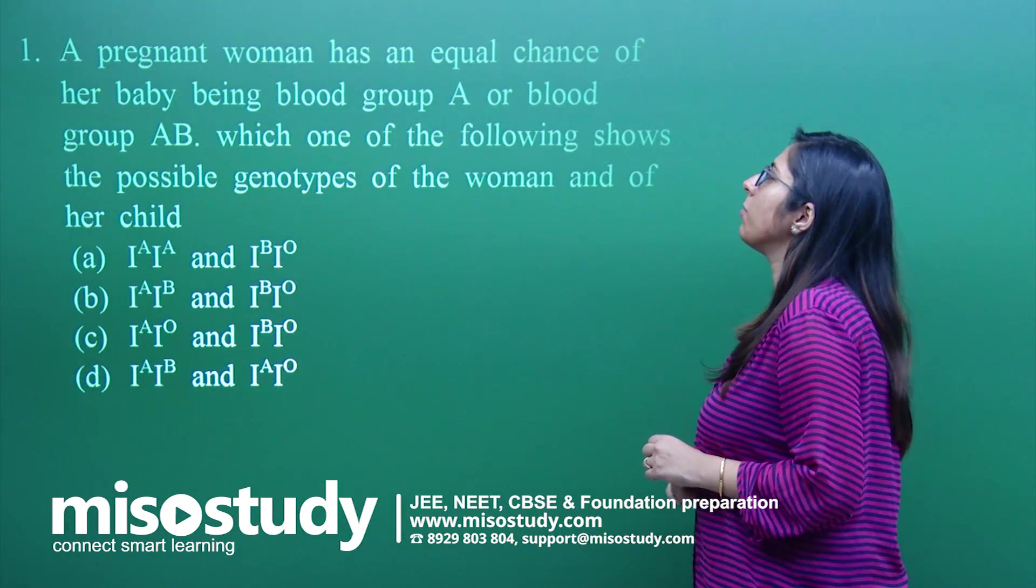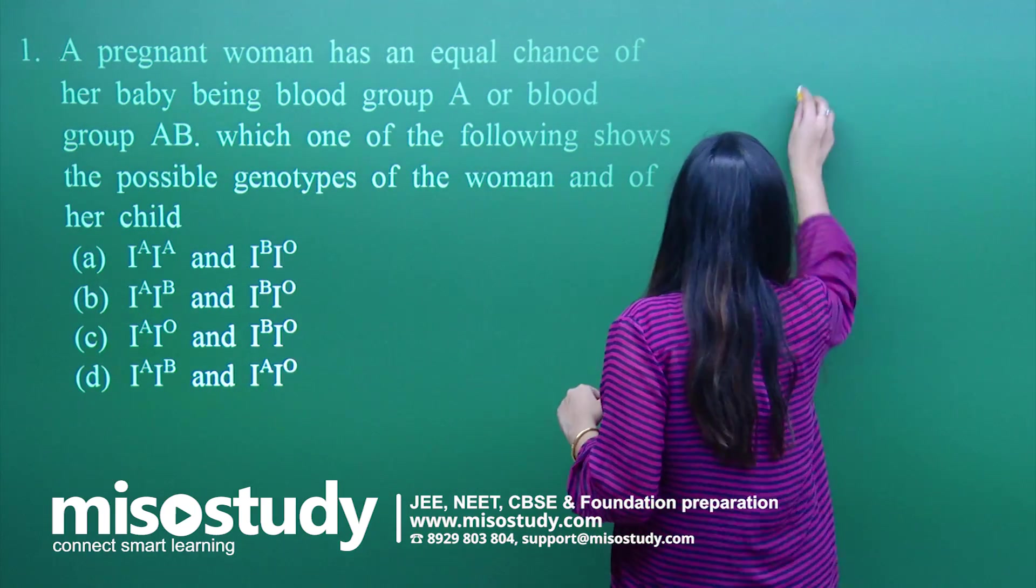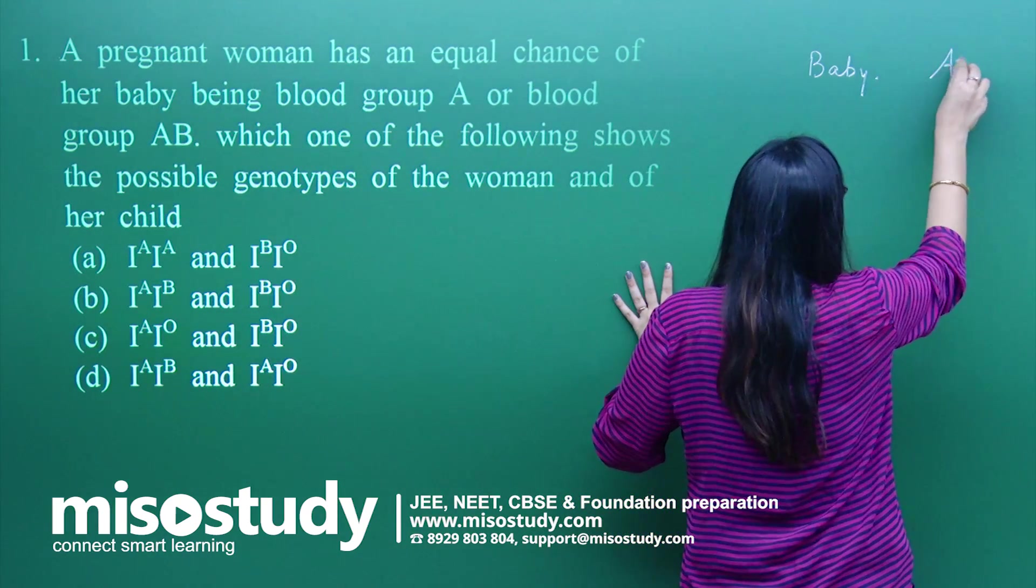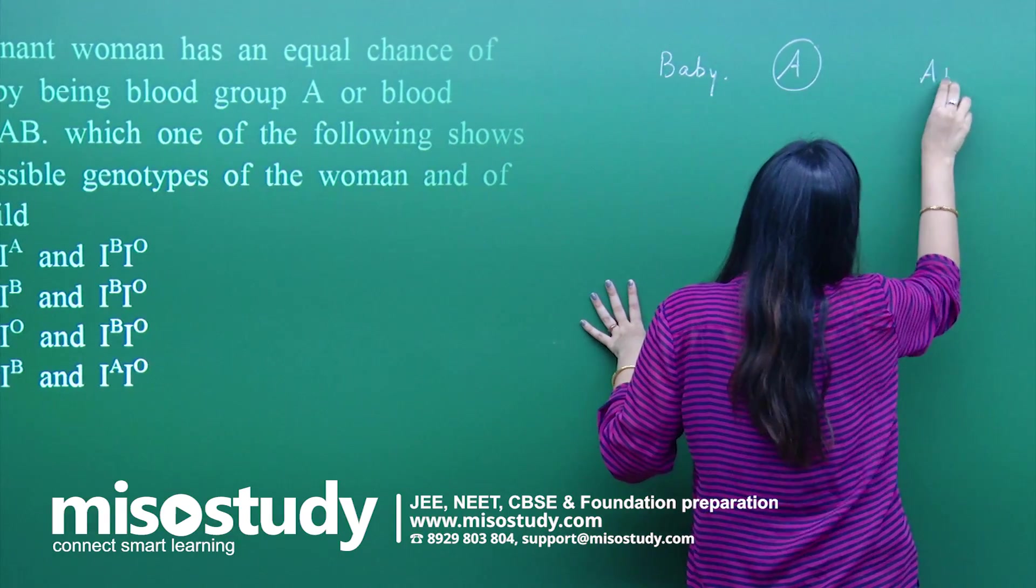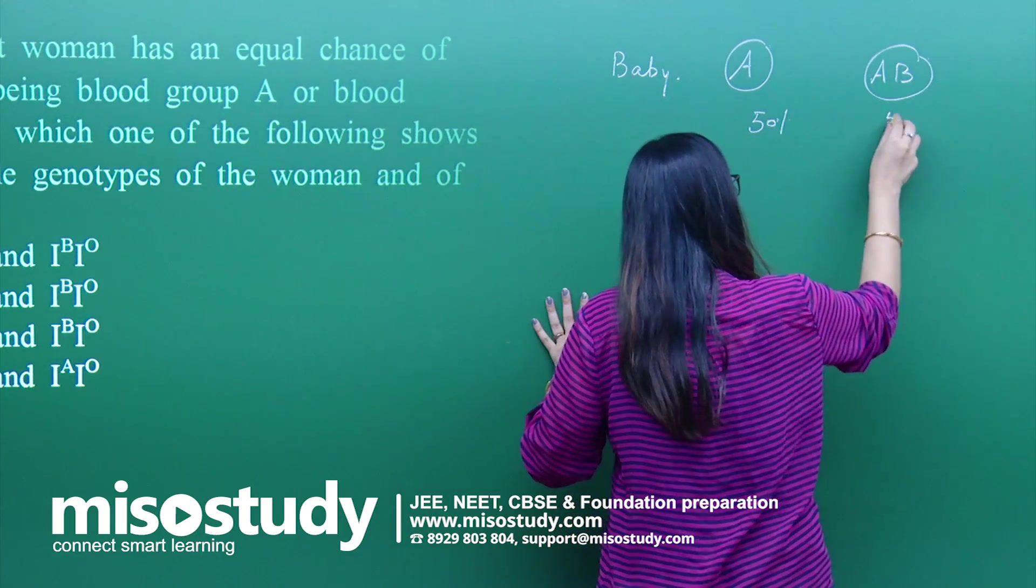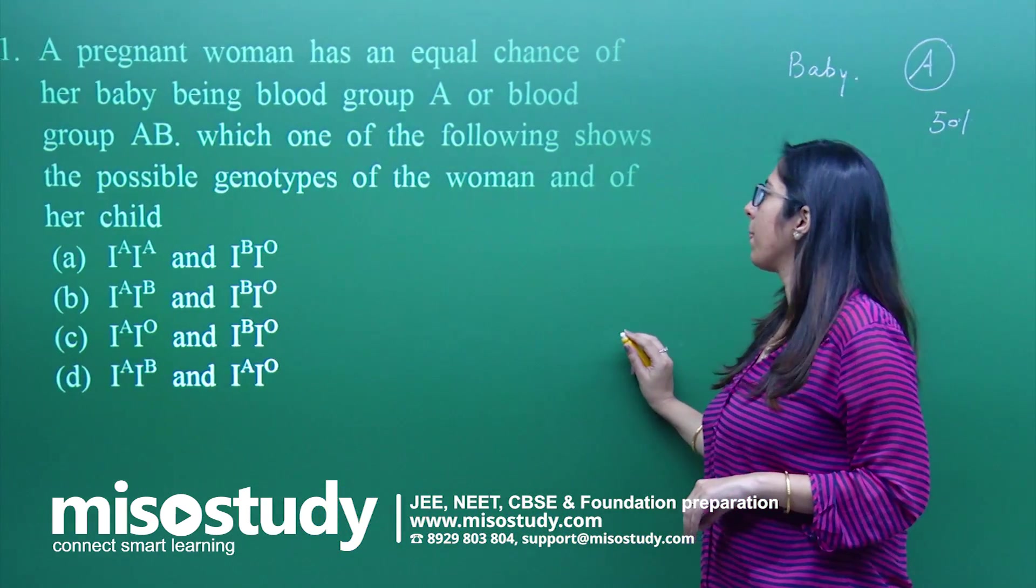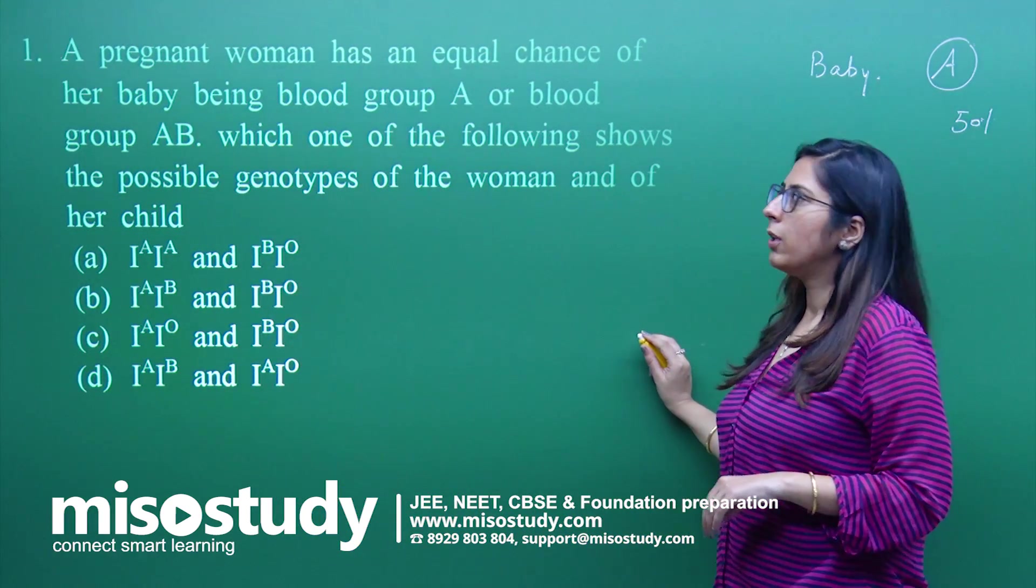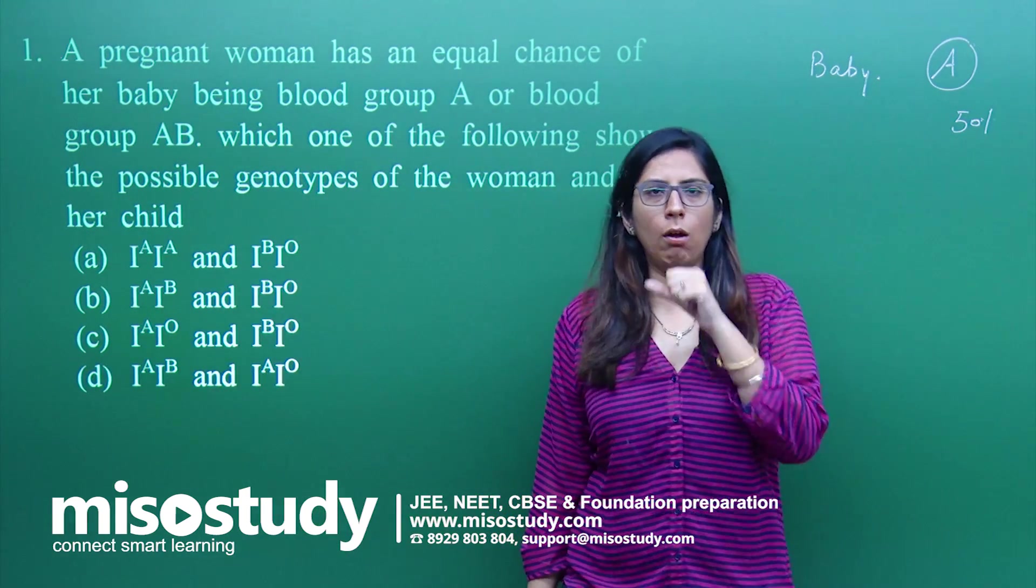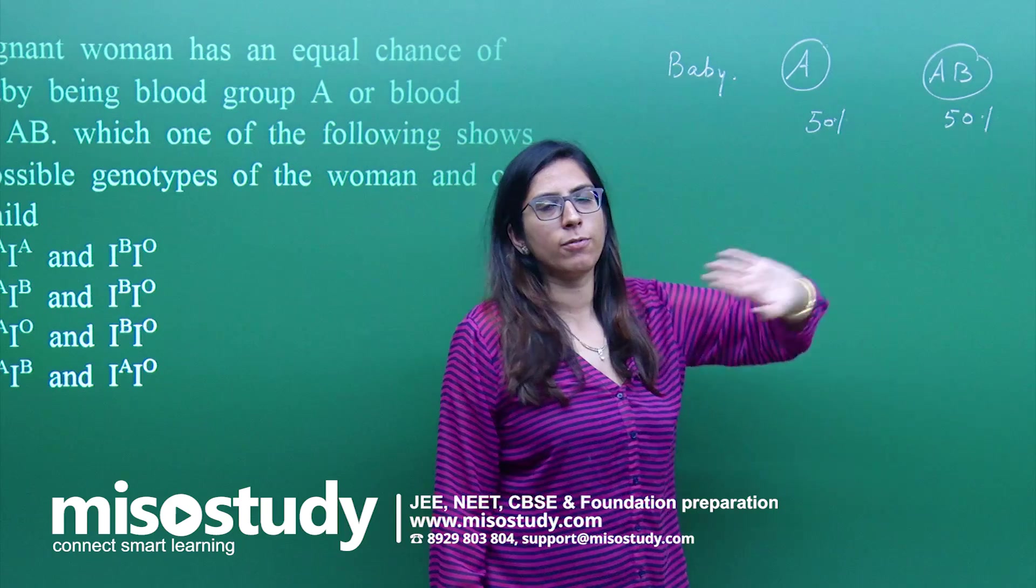Here is your first question. A pregnant woman has an equal chance of her baby being blood group A or blood group AB. That means the baby can be A blood group or the baby can be AB blood group, and data suggests that the probability of both of these are 50-50 percent. Which one of the following shows the possible genotype of the woman and of her child? The genotypes are given and we have to identify the correct genotype.